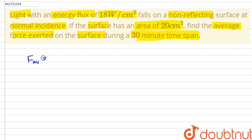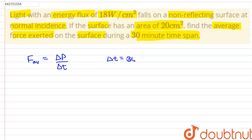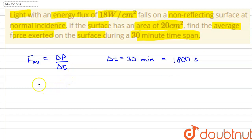F_average equals delta p divided by delta t. As given in the question, delta t equals 30 minutes, which equals 1800 seconds. Delta p is the change in momentum.